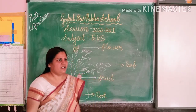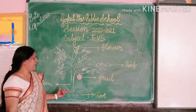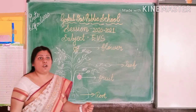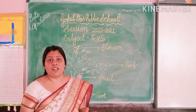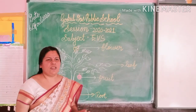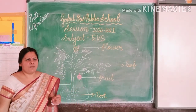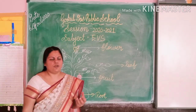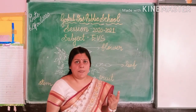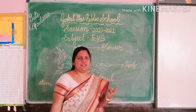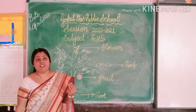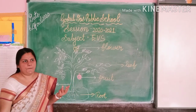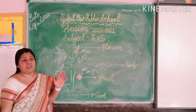Some plants are very small and some plants are very big. Big plants we call not plants — we call trees. Can you tell me the names of trees? I will tell you: Neem, Banyan, and Peepal. These three are the big trees.